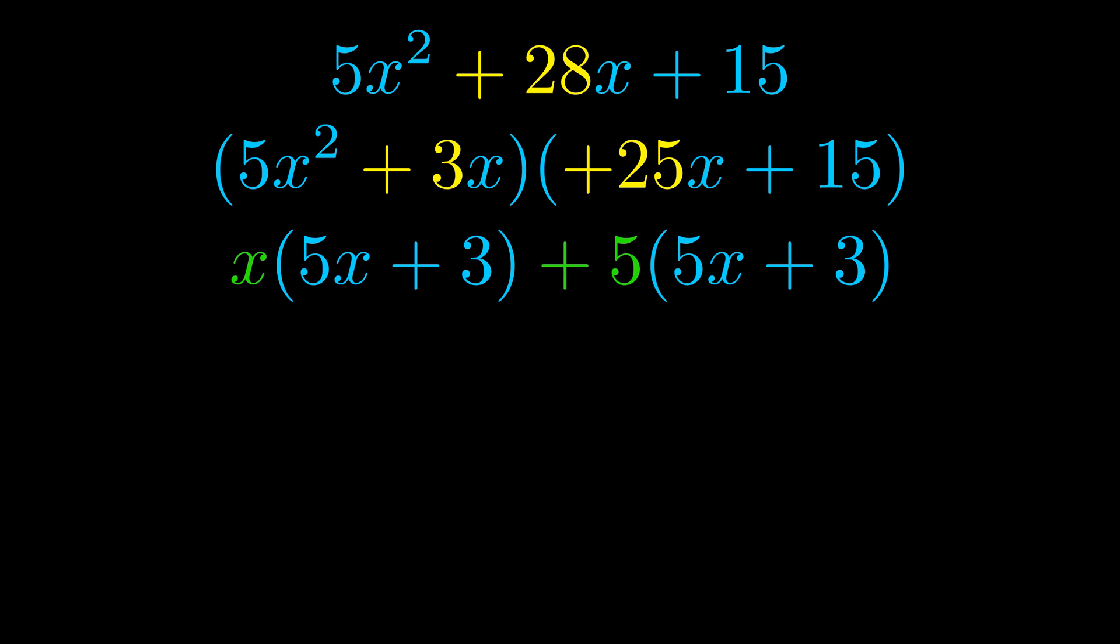Notice also how what remains inside of the parentheses is the same in both cases. The blue values are the same. Those blue values will become one of our factors, and we will combine the two green values, the GCFs that we pulled out, to get the other one.